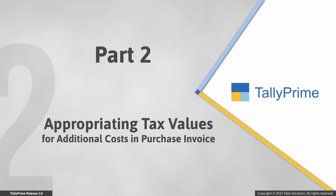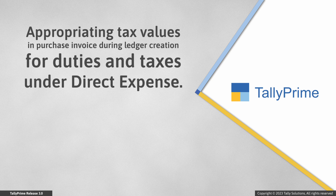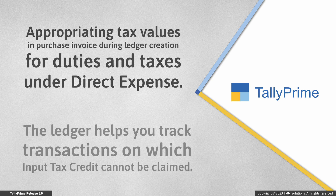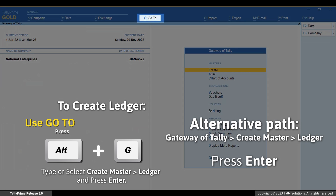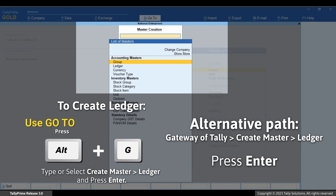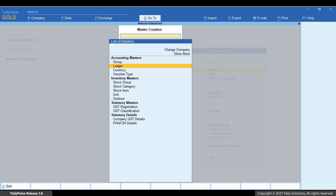Now, let us see how to appropriate tax values for additional costs in a purchase invoice. Consider that you want to create a ledger for duties and taxes under direct expense in order to keep a track of transactions on which you cannot claim input tax credit. In such cases, you can configure the ledger so as to appropriate tax values in a purchase invoice. Press Alt plus G.